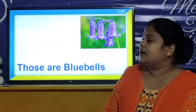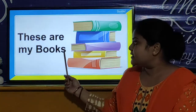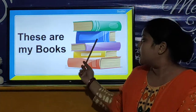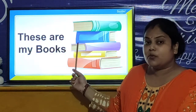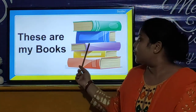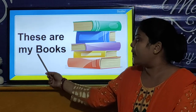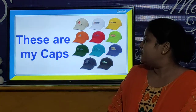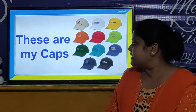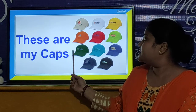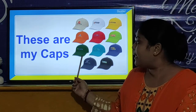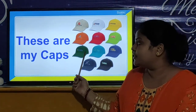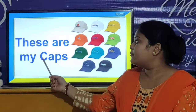Now we will look our next sentence. Our next sentence is: 'These are my books.' The books are near and there are more than one book, so we will use 'these are my books.' Our next sentence is: 'These are my caps.' There are more than one cap and the caps are near, so we will use 'these are my caps.'